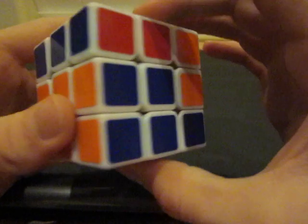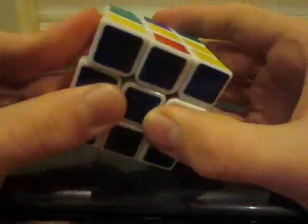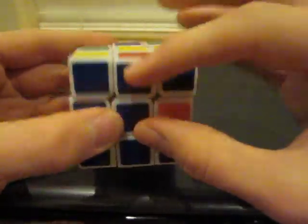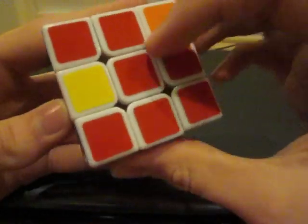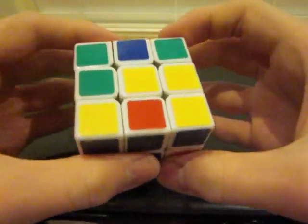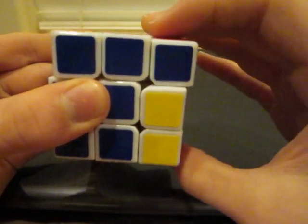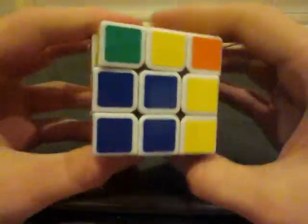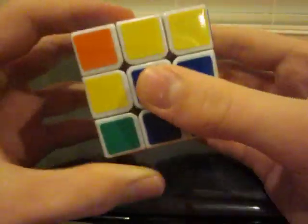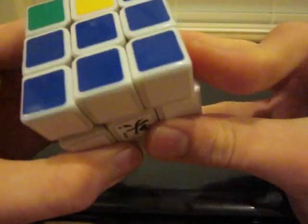So as you can see right now, I only have to place one more edge, and it's right here. I'll line up with the blue, and look on top, it's red. The red face is over here to the right. So we're going to do the move right algorithm, and that is U, R, Ui, Ri, Ui, Fi, U, and F.